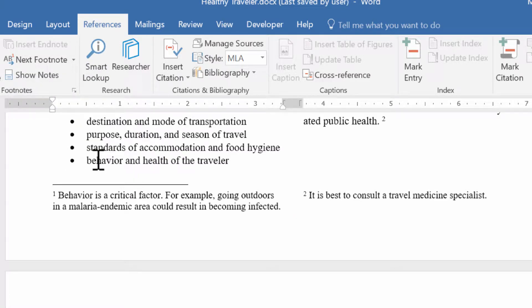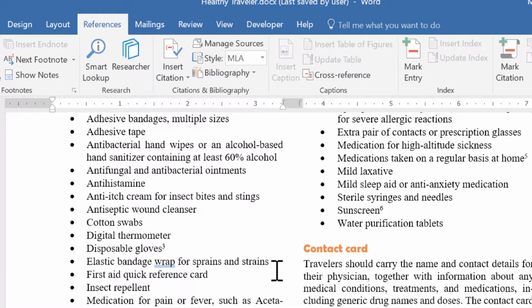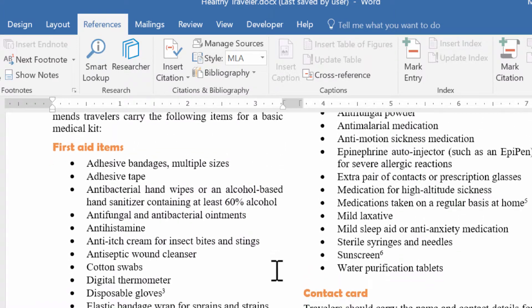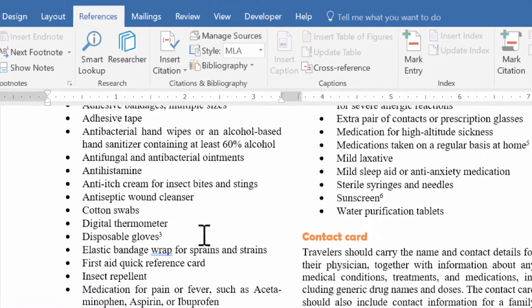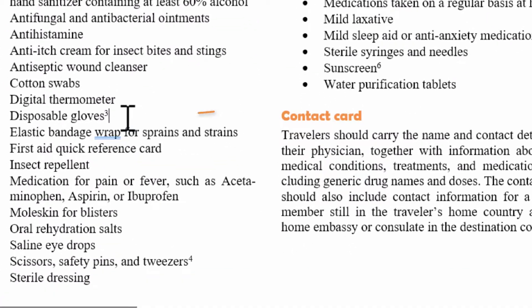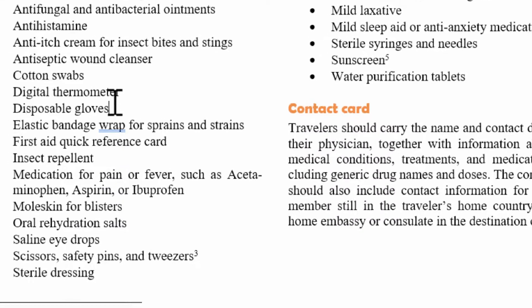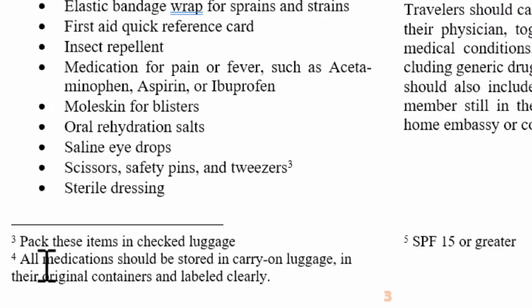Now to delete a footnote, we can just find it on our document. Let's pick on number three. If I go here and hit Delete — it highlights it — and I hit it one more time, it will remove not only the little number three at the top, but also down at the bottom, and it renumbers everything else. Again, very intuitive.